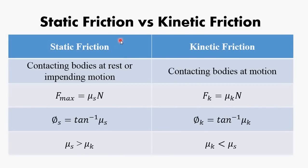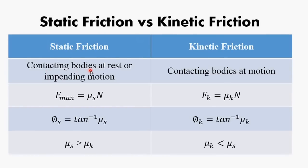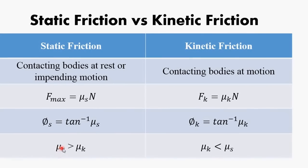Here is the comparison between static and kinetic friction. Under static conditions, the contacting bodies or surfaces are not in motion. The maximum value of static friction is calculated from the formula mentioned before. For kinetic friction, the force is calculated from F_k = μ_k × N. The angle alpha between the resultant and the normal is called φ_s for static friction, equal to tan⁻¹(μ_s). On the other side, alpha is called φ_k for kinetic friction, equal to tan⁻¹(μ_k). Usually, but not always, μ_s is greater than μ_k.